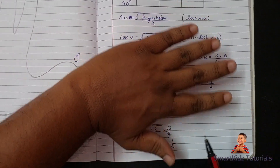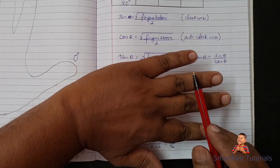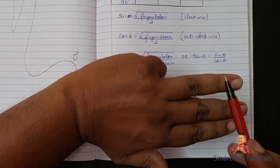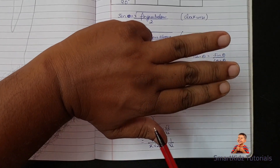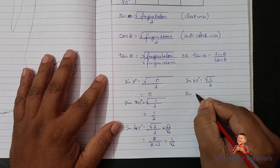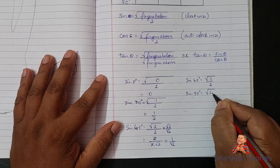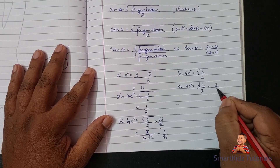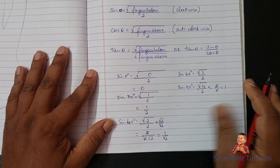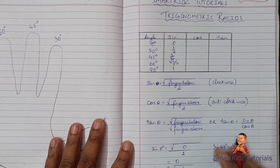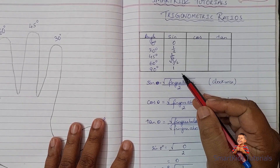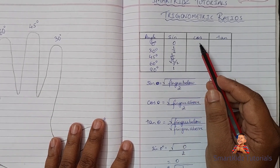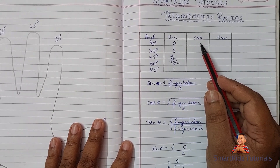Now for sine of 90 degrees, I close the little finger. How many fingers are below 90? 1, 2, 3, and 4. So sine of 90 degrees equals square root of 4 upon 2. The square root of 4 is 2, so 2 upon 2 gives us 1. Sine of 90 is 1. That's the first column filled up.